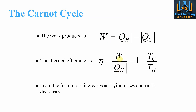We can also express efficiency in terms of temperature: η = 1 − Tc/Th. The efficiency will increase as Th increases or Tc decreases. We can play with the actual operating temperatures of the system, and that will have a direct effect on the thermal efficiency of the process.